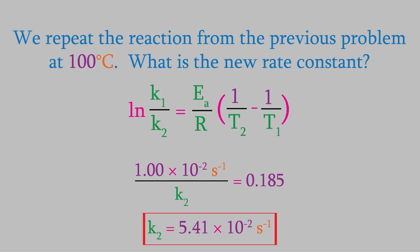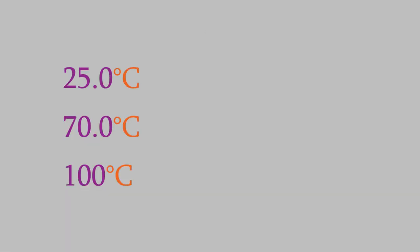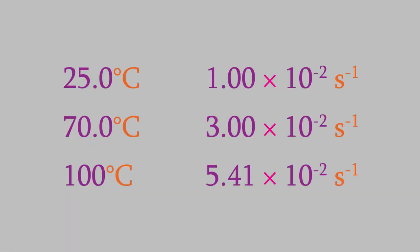Notice that in the past couple of problems, we've used three different temperatures, and we got three different rate constants. As you can see, the rate constant got higher every time the temperature went up. That means the reaction gets faster at higher temperatures, which is what we might expect. So, one way we can make a reaction faster is by raising the temperature.